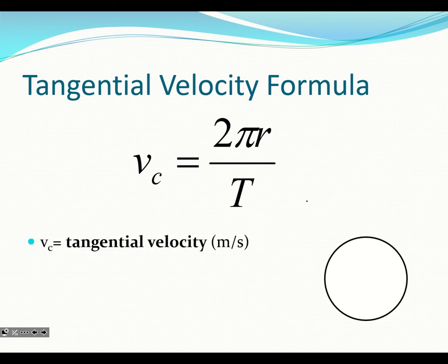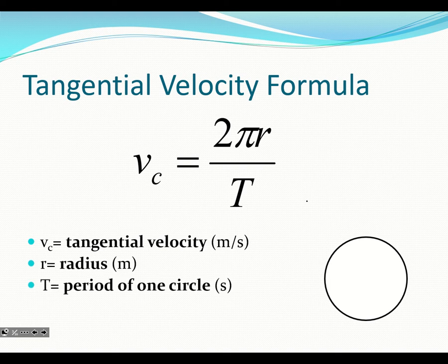So vc is our tangential velocity, r is our radius, T is our period, and pi is pi — 3.14159, or whatever pi is. On your calculator, use the pi button. This assumes the object is moving at a constant speed as it travels around a circle.